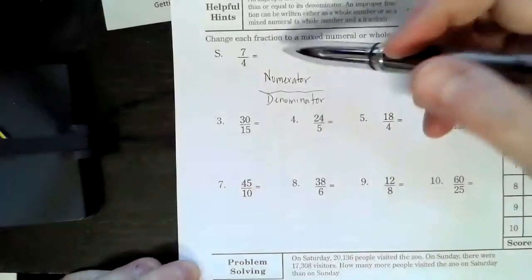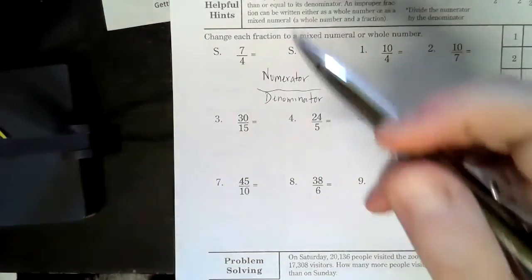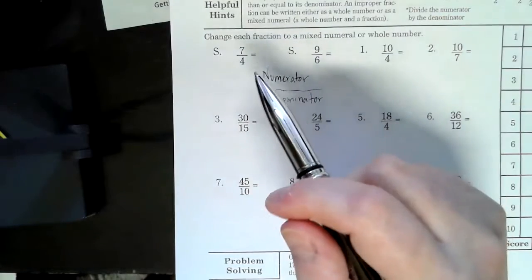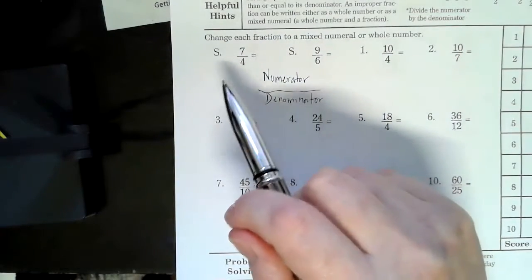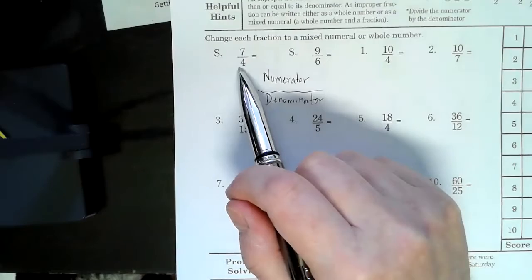And when the numerator is larger, it's top heavy, so we are going to, because all fractions are also division problems, this is also read as seven divided by four.